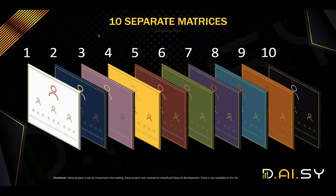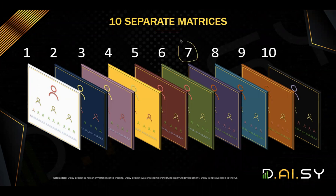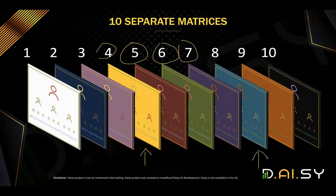Compression applies to the matrix but it doesn't apply to the direct referral bonus. If you contribute to the first seven tiers, you will get access to all seven matrices. Whenever people contribute to tier four, for example, they will be placed in that matrix and you will be able to benefit from it. But if you have seven tiers and someone is coming in at tier eight, you will not benefit from that.